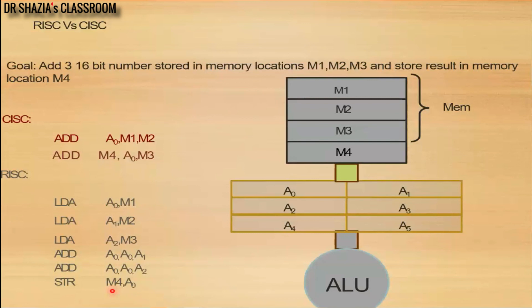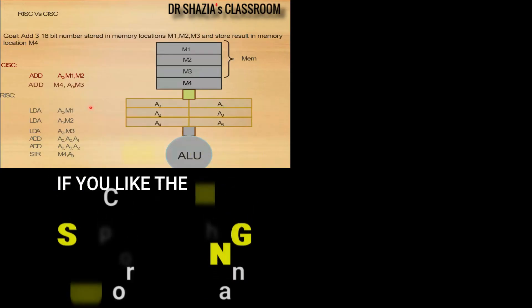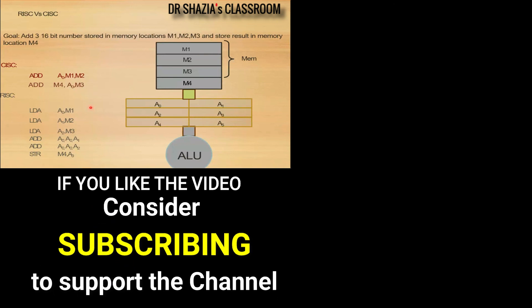In CISC, one instruction can have multiple micro-operations, whereas in RISC, one instruction is one operation. This was the introduction class covering a basic computing system overview, the basic architecture of 8086, and the course approach in terms of instruction set architecture — with the two broad categories of RISC and CISC. In the next class, we will start our discussion of the 8086 processor in more detail and see which architecture it follows.